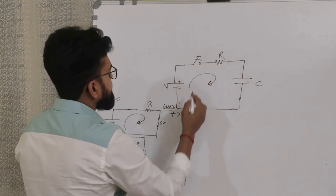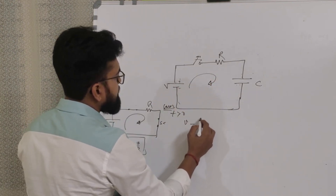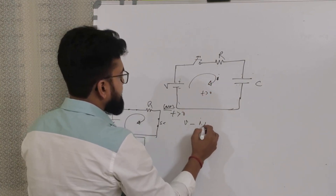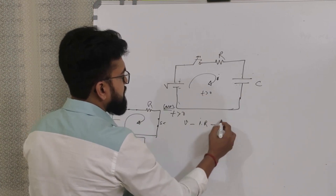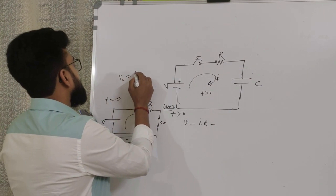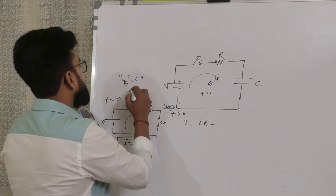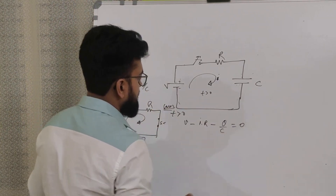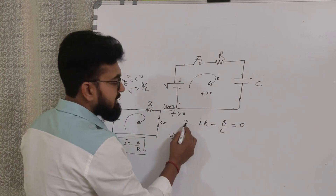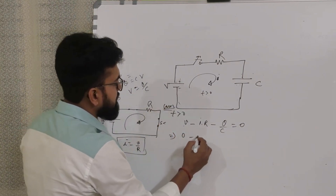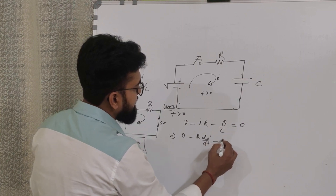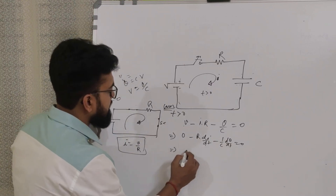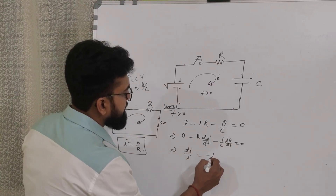To find the charging equation, we apply KVL. With current I flowing at time t greater than 0, we write: V minus I·R minus the voltage across the capacitor equals 0. Since Q equals CV, voltage across the capacitor is Q over C, giving us: V minus I·R minus Q/C equals 0.